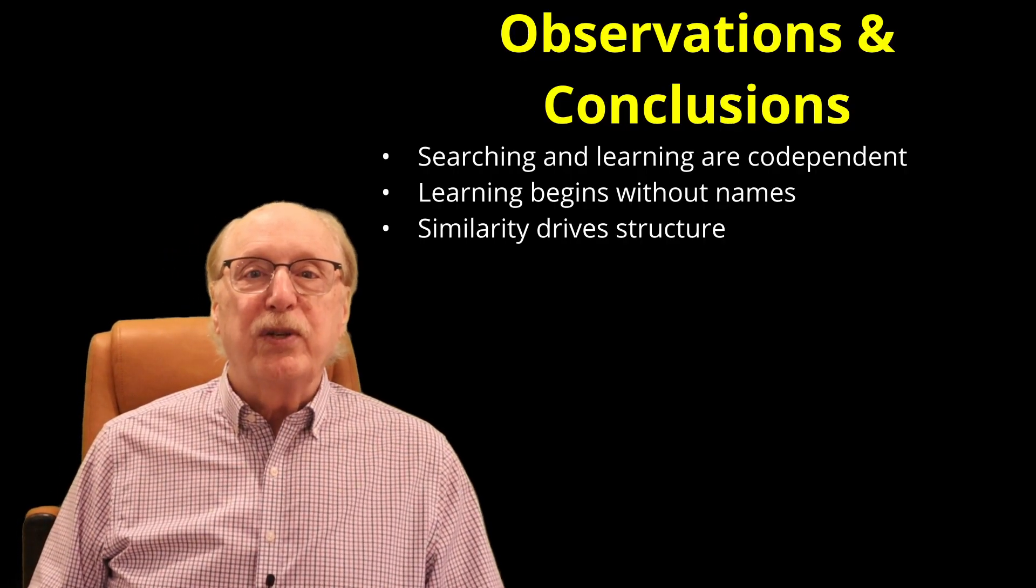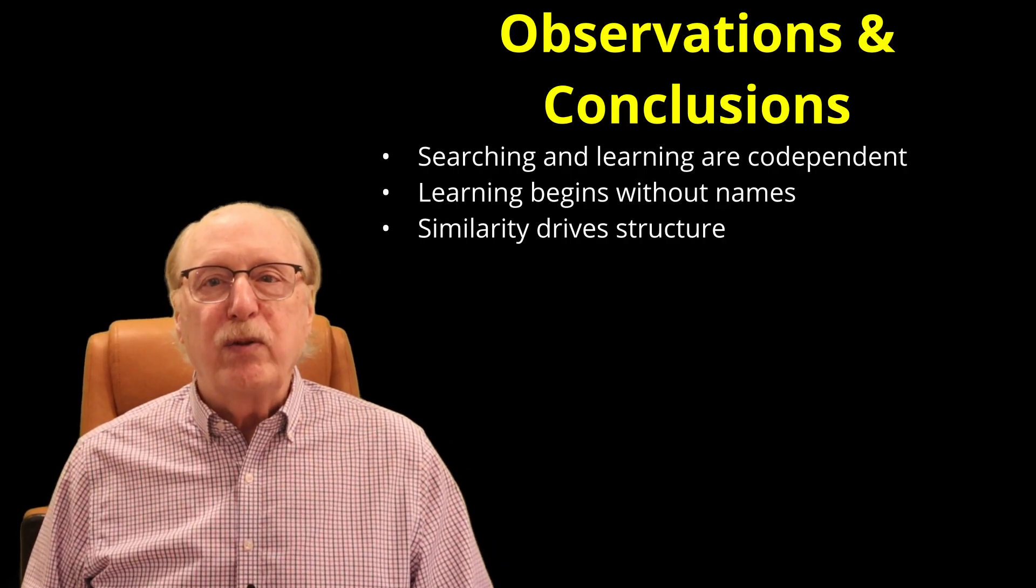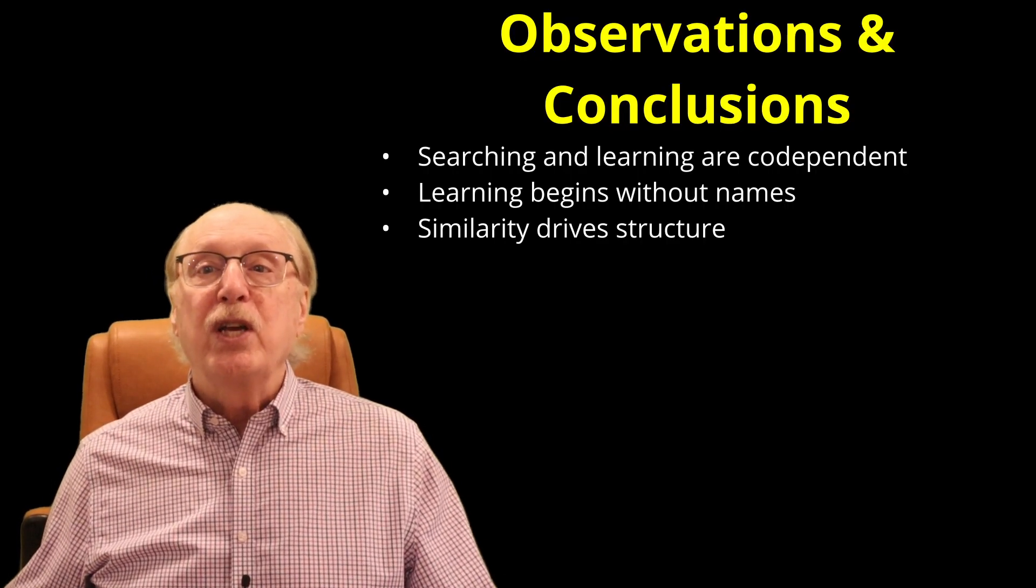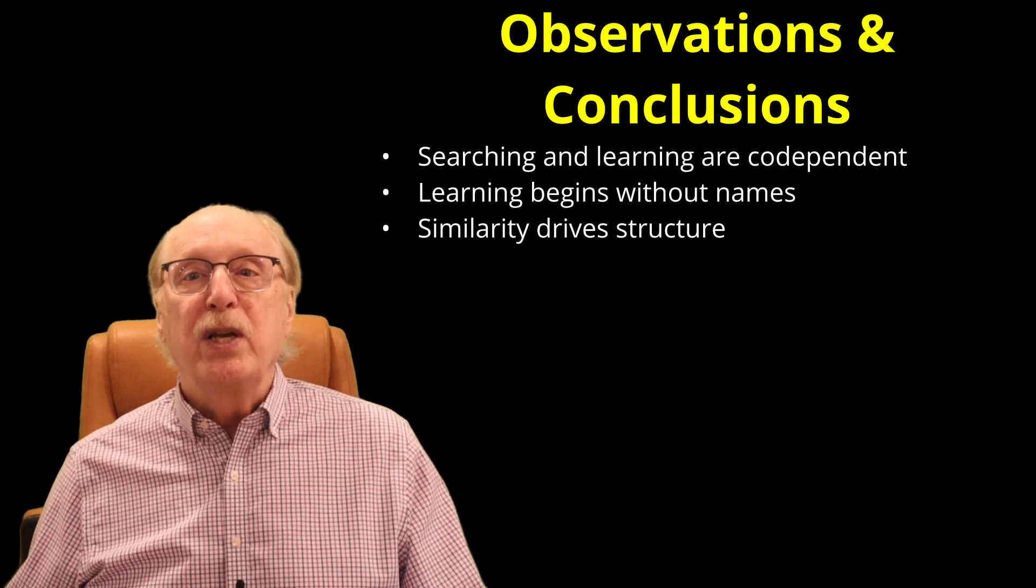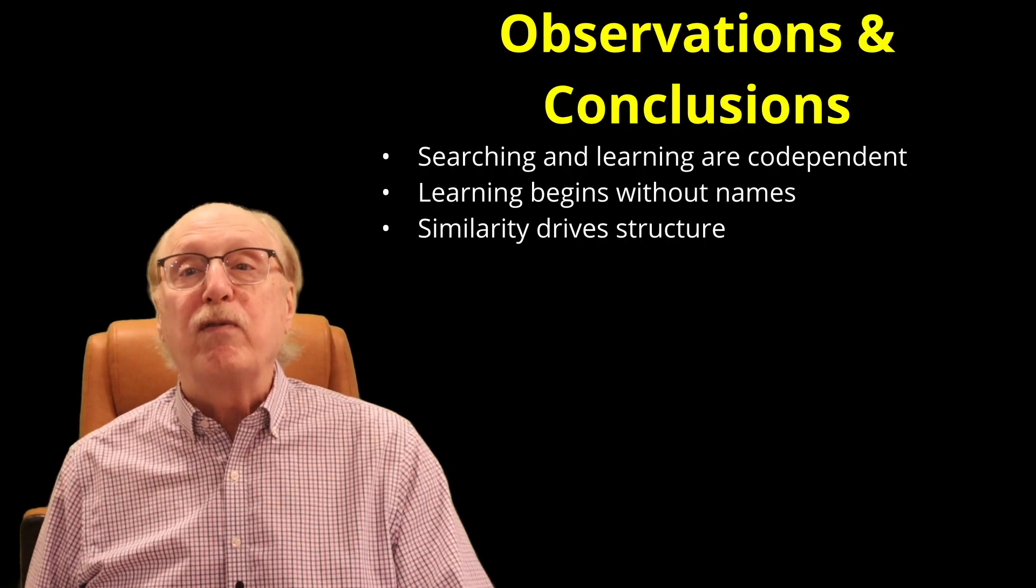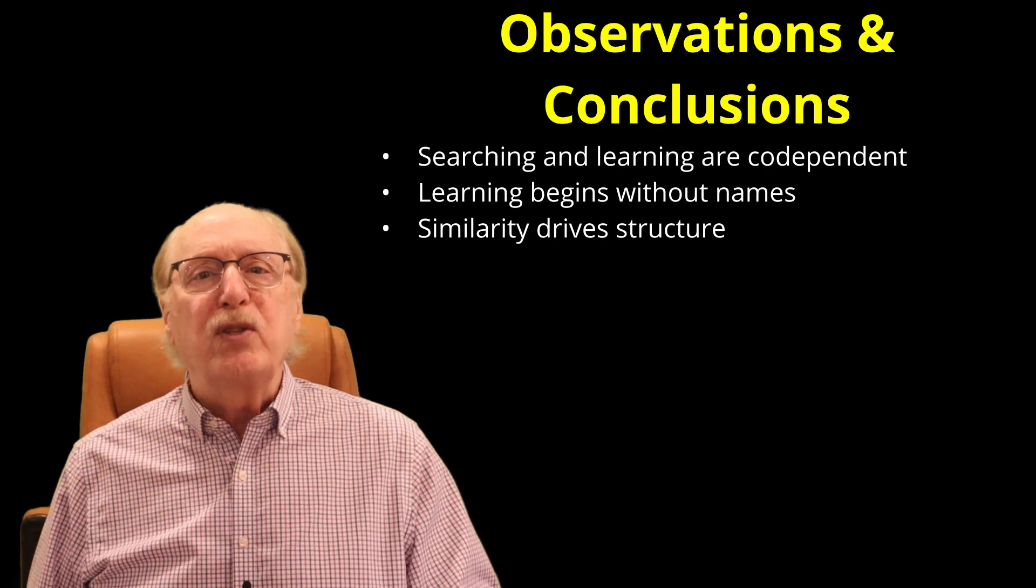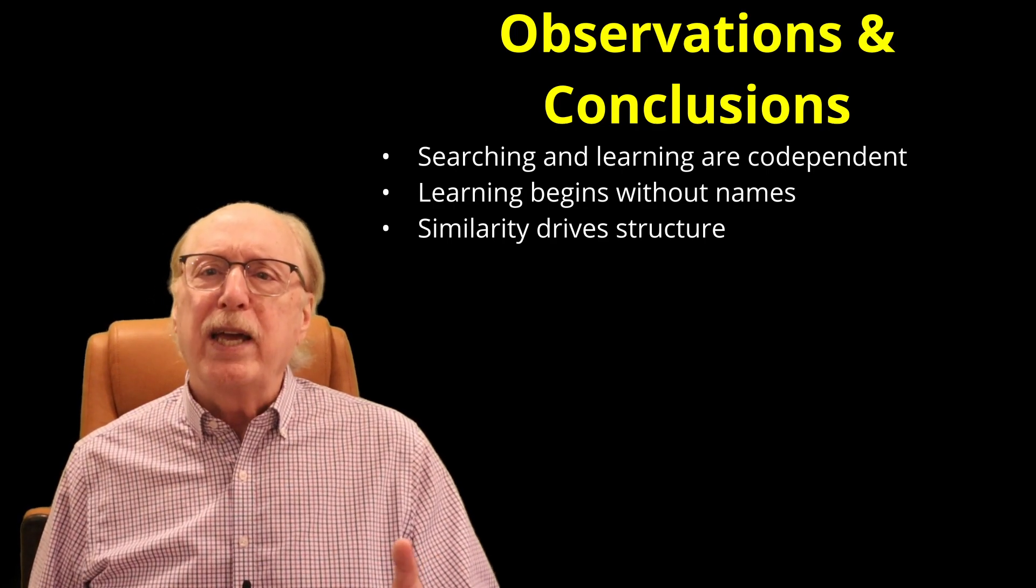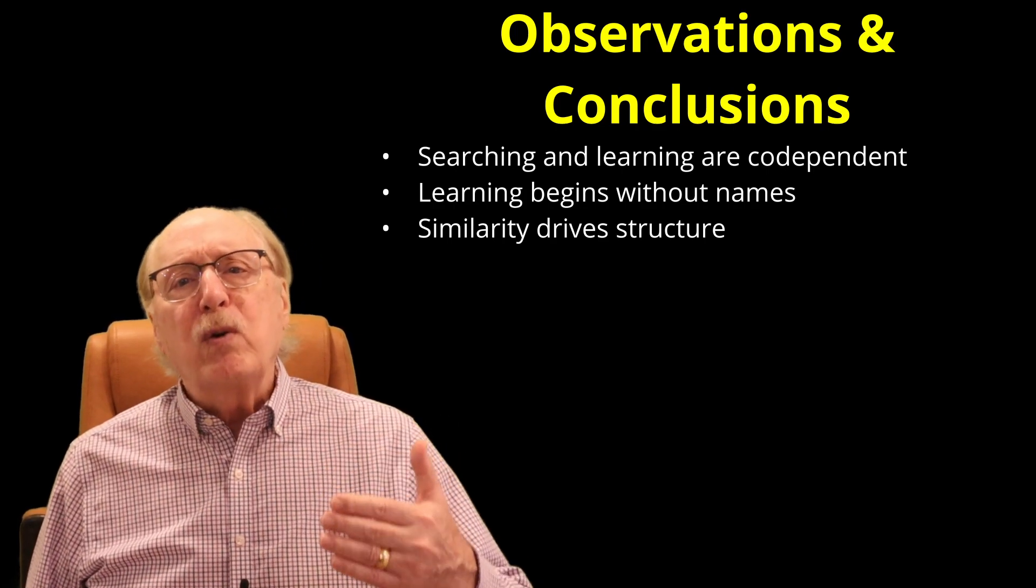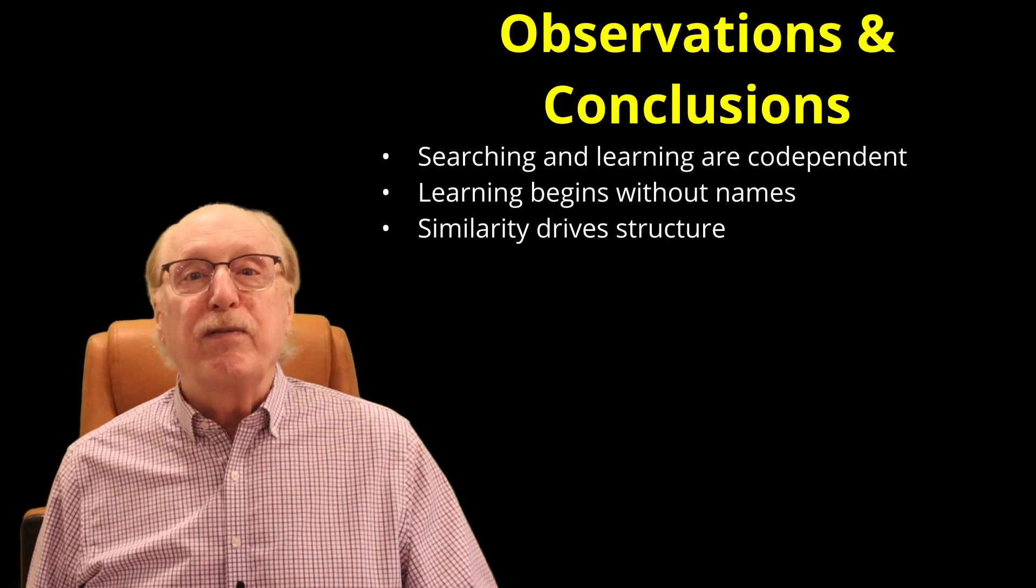Similarity drives structure. The graph naturally forms hierarchies based on shared attributes. When two examples share a subset of attributes, the system creates a parent concept to hold the overlap. This is abstraction, the same process by which humans learn categories like dog, animal, or living thing, and it requires no external instruction, only observation and differentiation.